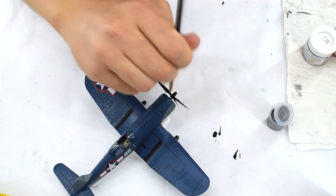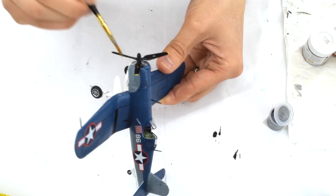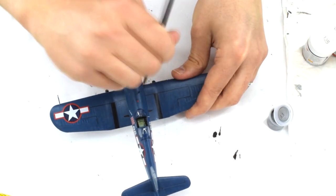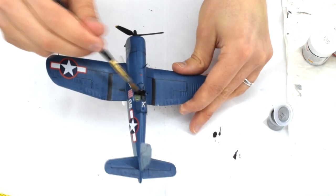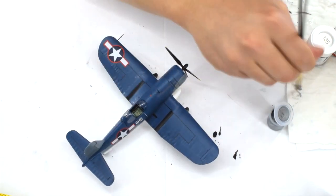Humbrol 11 silver was dry brushed very lightly in various places to give a slightly weathered effect. This gives the impression of light chipping and damage to the paintwork. I focused around the engine, the propeller blades and access areas of the aircraft.